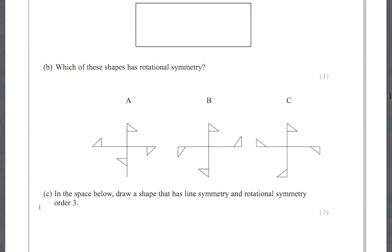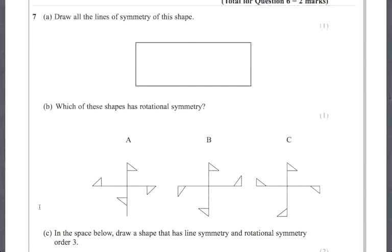Question seven has a question to do with symmetry, and part B asks which of these shapes has rotational symmetry. You're allowed in the exam to have tracing paper — if you think it would be useful, put your hand up, wait for the invigilator, and ask for a piece of tracing paper. It's very helpful for questions like this, because you might look at shape C and decide it has rotational symmetry without noticing that the vertical lines going up and down aren't the same length. Tracing paper will show you clearly, so don't forget you can ask for it.